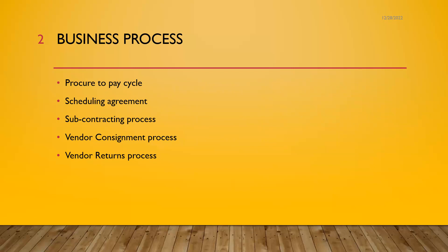Based on the schedule lines, material will be delivered by the vendor — that is scheduling agreement. Subcontracting is also a business process in SAP MM. What is subcontracting? It involves sending the raw material to the vendor, and the vendor in return sends us back the finished goods. That is the subcontracting process.